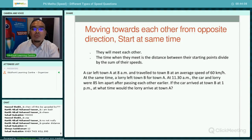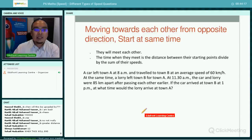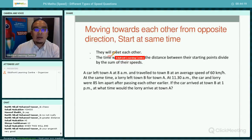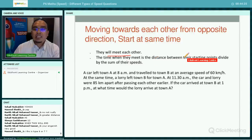Now, the next question is moving towards each other from the opposite direction, starting at the same time. So moving towards each other, starting at the same time. What happens is that they will meet each other. They will meet. And then, the time when they meet is the distance between their starting point divided by the sum of their speeds.